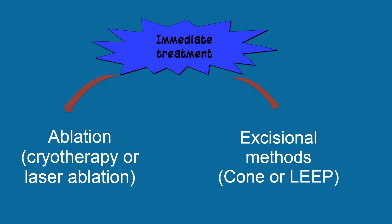There are two approaches to immediate treatment: ablation — for example, cryotherapy or laser ablation — and excisional methods such as cold knife cone or LEEP procedure. The principal difference between ablation and excisional methods is that ablation provides no diagnostic information. Additional factors to consider are future childbearing plans and patient compliance.